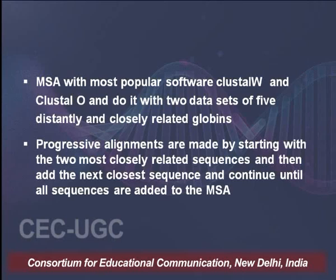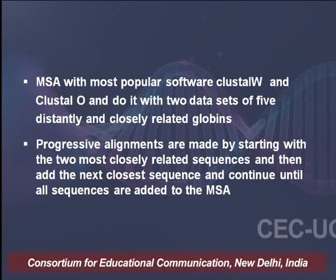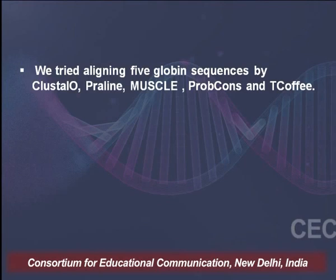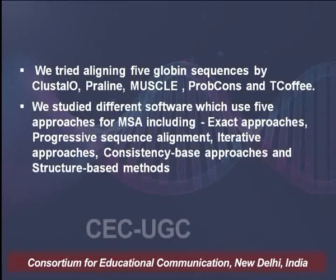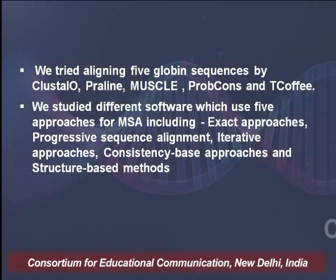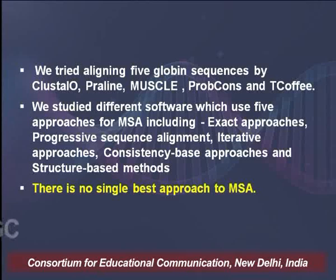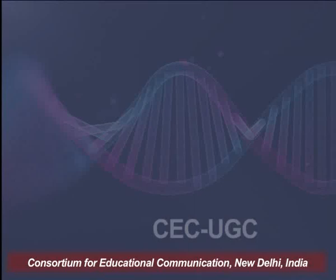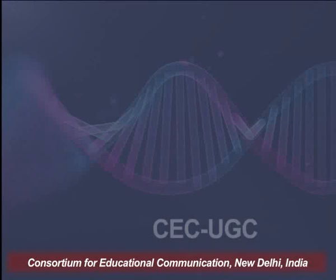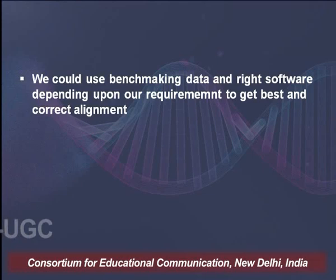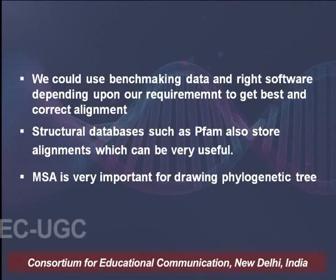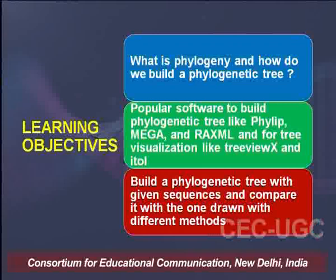We talked about progressive alignments and how progressive alignment is used in Clustal W and Clustal Omega. We also worked with several softwares: Clustal W, Praline, Muscle, MAFFT, T-Coffee, and we studied different approaches for MSA including exact approaches, progressive sequence alignment, iterative, consistency-based, and structure-based methods. Finally, we concluded there is no single best approach for MSA, and that benchmarking data and structural data will be very useful when identifying a correct multiple sequence alignment for drawing a phylogenetic tree.